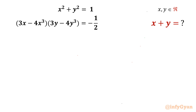Welcome back to Infigyan friends. Today in this video we are going to take up one very interesting and challenging system of equations. We have two equations: x squared plus y squared equals 1, and (3x minus 4x cubed)(3y minus 4y cubed) equals negative one half. We have to evaluate x plus y, where x and y belong to real numbers. I will solve this system using trigonometric identities.